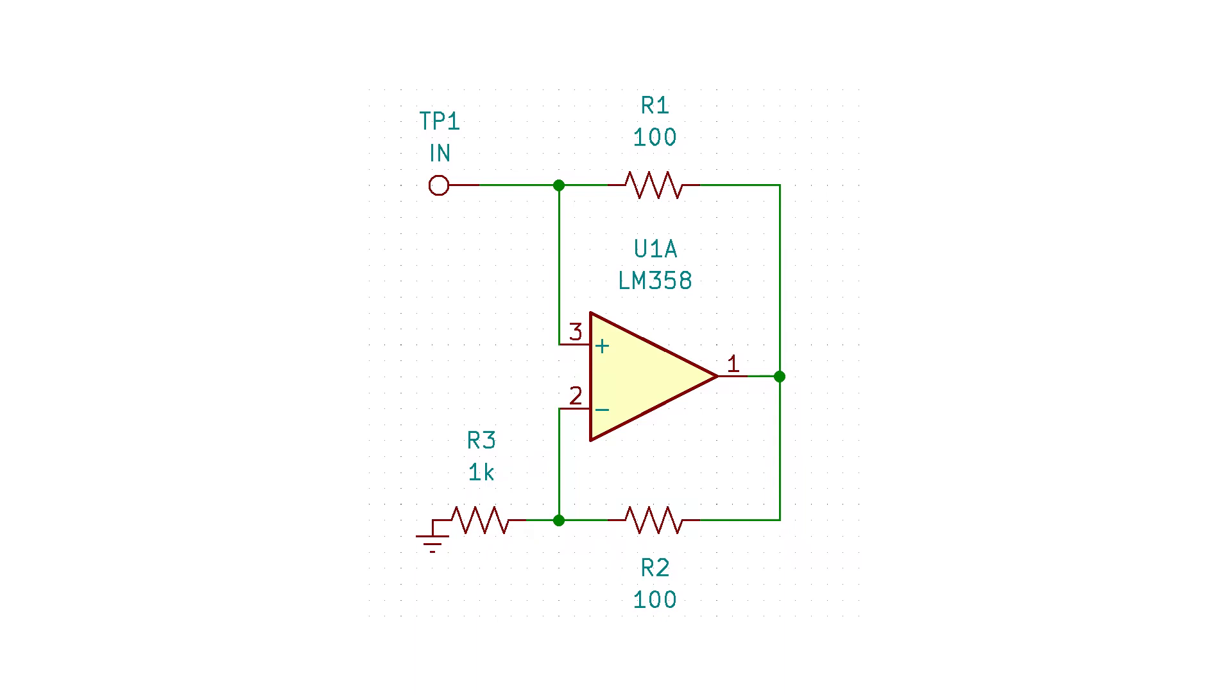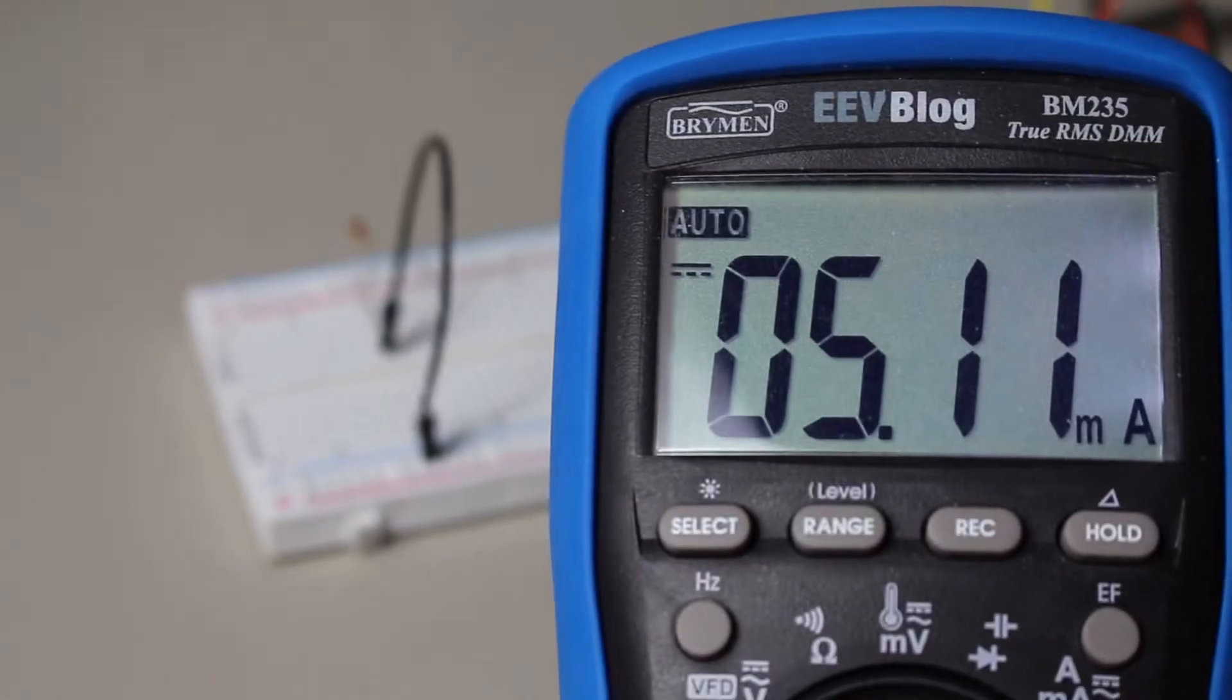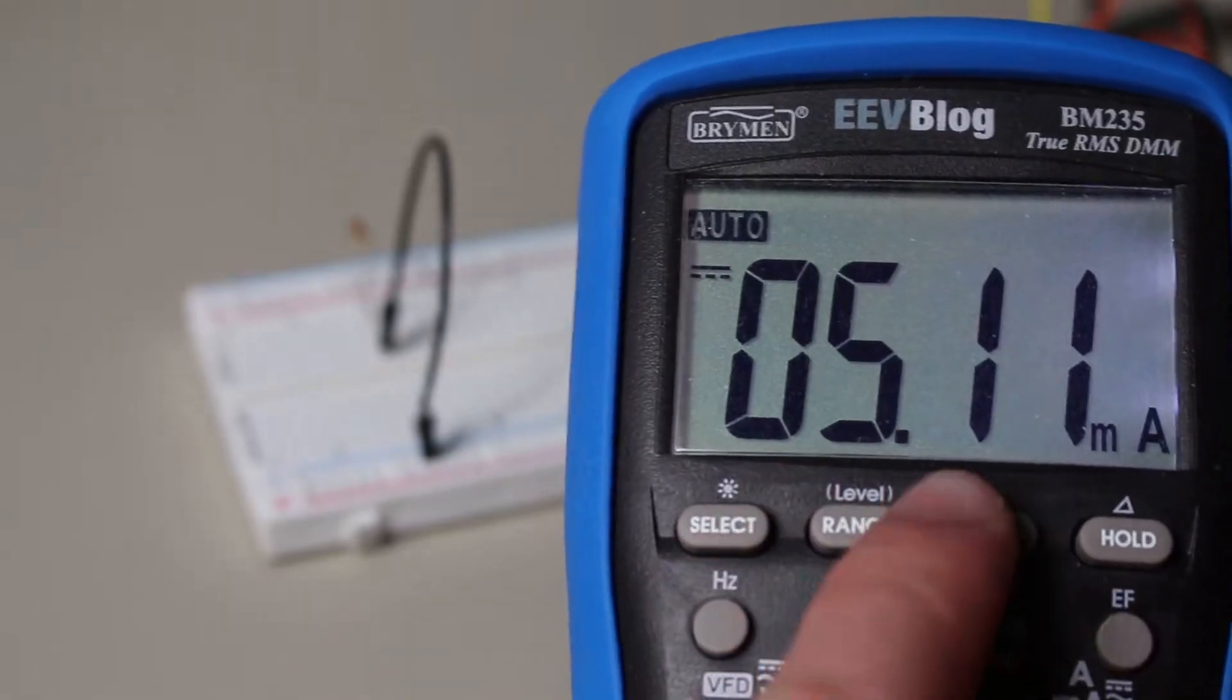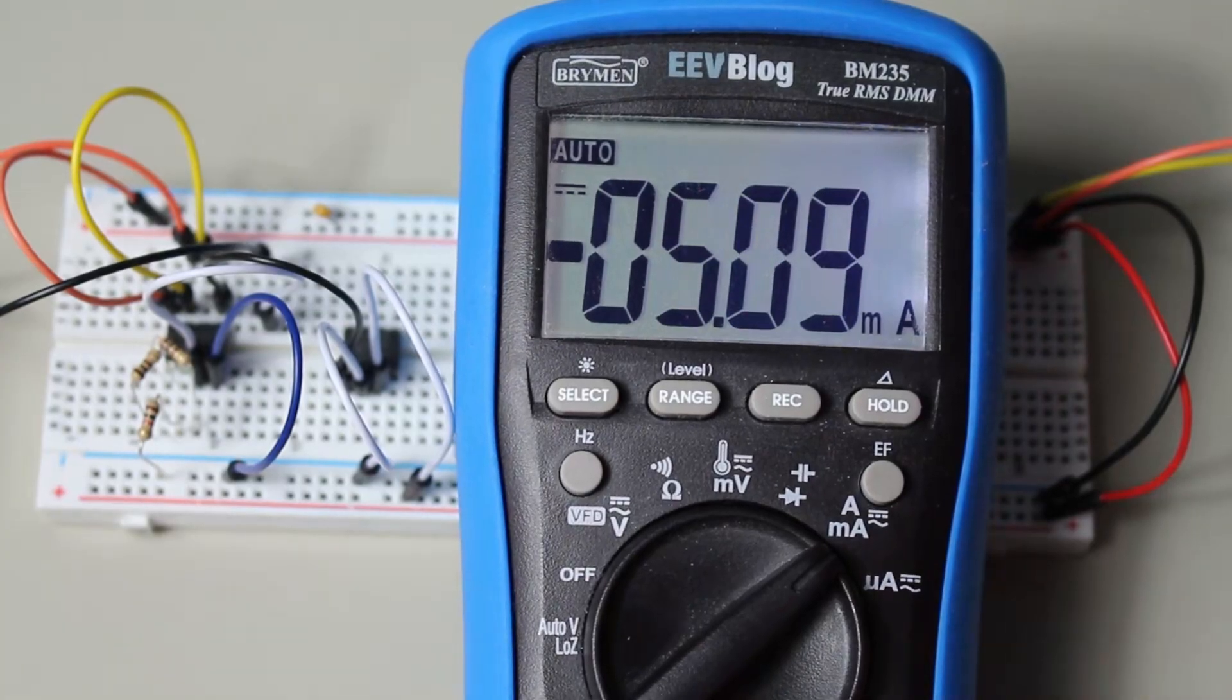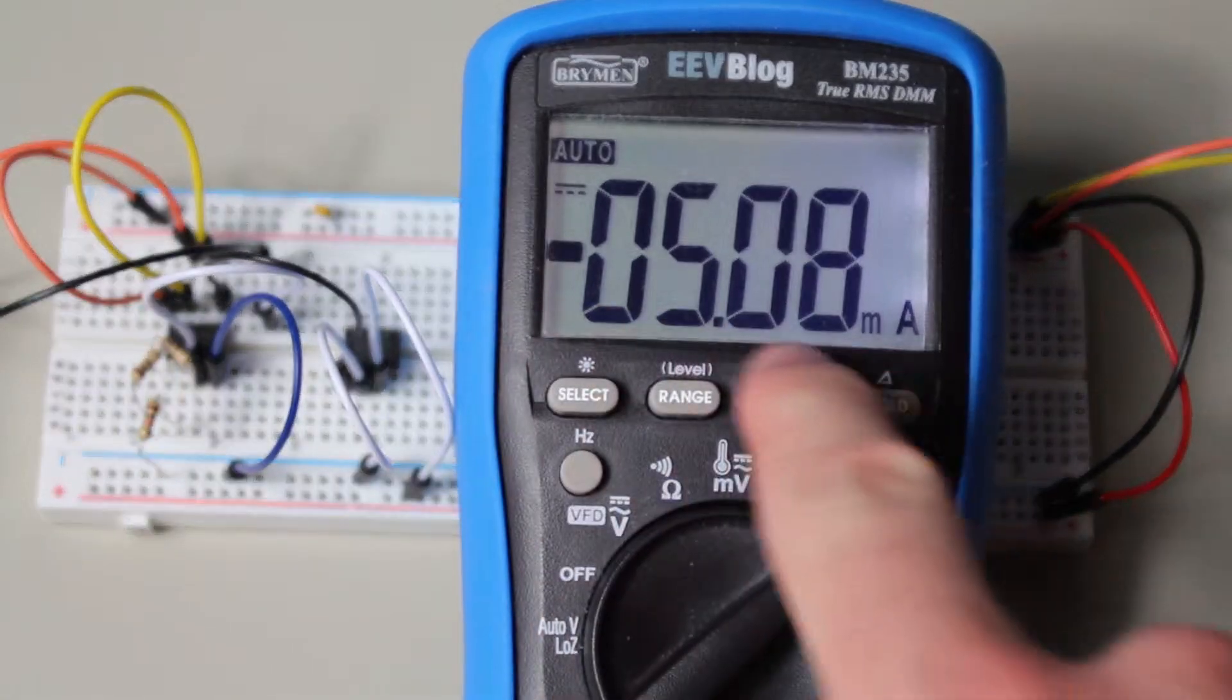Let me show you the resistor example first, since that will be the easiest to understand. Remember from the beginning of the video when I showed you the positive 1k ohm resistor? Well, here's the result when I used the negative 1k resistance instead. And yes, we were correct when we predicted that the current would be negative 5 milliamps.